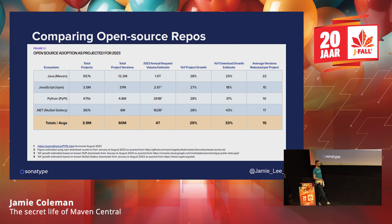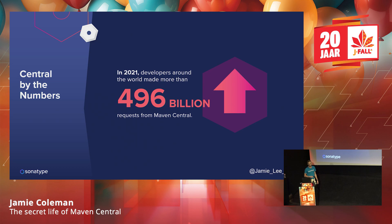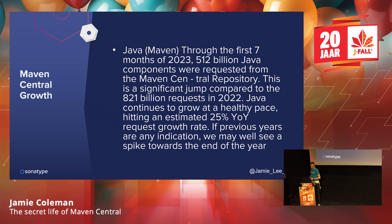Year-on-year growth and download growth are still growing, so Java is still a very healthy language. A year ago we were at 8.8 million stored components, 27 terabytes of files, and 79 different namespace organizations and publishers. In 2021, developers around the world made more than 496 billion requests to Maven Central, and that's exponentially growing. New projects are being added and existing projects are being maintained — Java is still a very healthy ecosystem.